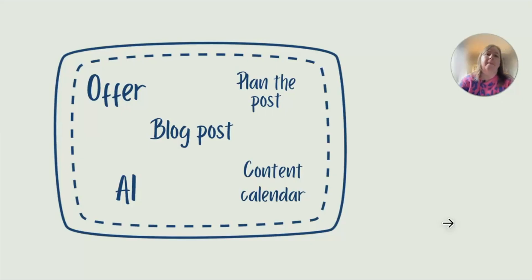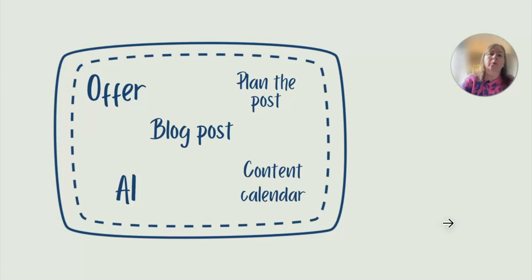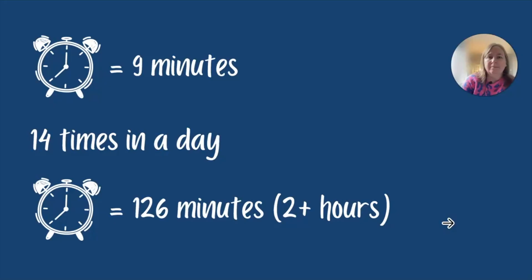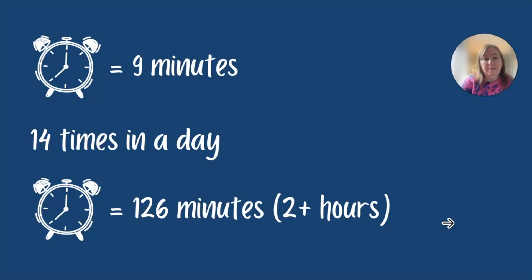So how can you save more time? If we have all those tasks in one piece of software — storing offer information, planning the post, writing it, scheduling it in a content calendar, and using AI capabilities — all in there, then we're not wasting time jumping from software to software. It also keeps us organised because everything is in one place. Using nine minutes as a guide: if you switch between different software just 14 times in a day — and you probably do it more than that — that's 126 minutes wasted just trying to refocus. You might think you're being efficient, but are you as focused as you could be?